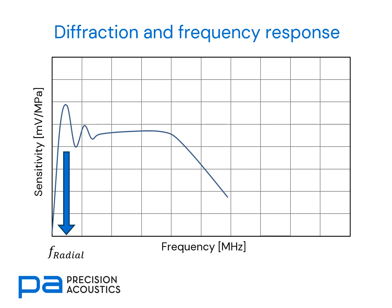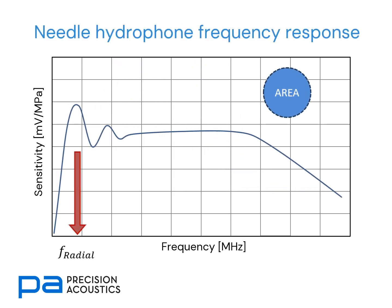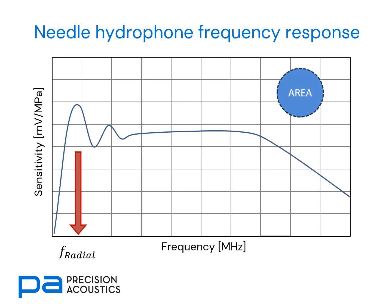Notice here where the peak of the radial resonance is for a larger area needle hydrophone. If we move to a smaller area needle hydrophone, the shape remains the same, but expands along the frequency axis, and we also notice that the peak in the response has moved upwards.